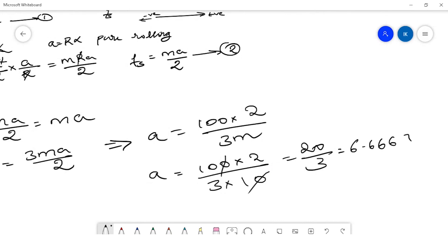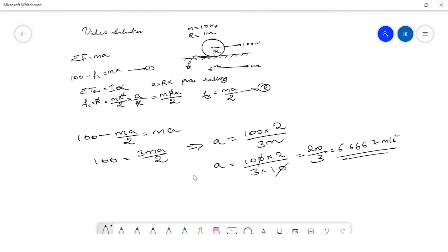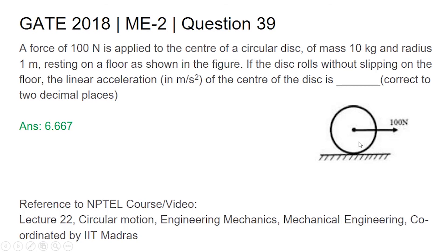Therefore, the linear acceleration of the center of the disk is a = 6.67 meter per second square. Coming back to the slides: for this question, a force of 100 Newton is applied at the center of the circular disc of mass 10 kilogram and radius 1 meter resting on a floor. If the disc rolls without slipping, the linear acceleration of the center is 6.667 meter per second square. You can also refer to NPTEL video lecture number 22, circular motion, engineering mechanics, coordinated by IIT Madras. Thank you.